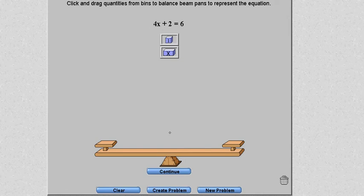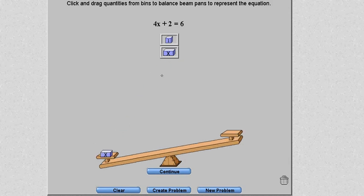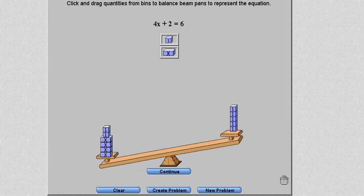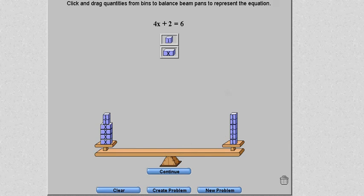One thing we notice is with nothing on the scales, they're balanced. But if I put an x there, it starts to fall to one side. This equation is saying I've got four x's on that side and two 1's on that side. On this side, I've got 6. You'll notice as soon as I put that 6th one on, it balanced out.